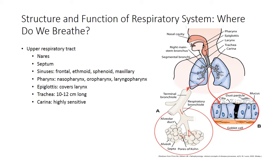The septum separates the right nostril or nares from the left. The septum should be intact as a solid wall to protect the left from the right and vice versa. We have nasal sinuses — the frontal, ethmoid, sphenoid, and maxillary sinuses — located on our face, behind our forehead, and behind our cheeks. These sinuses are usually air-filled and do not contain liquids; they are lined with mucus, but they do not contain fluids.